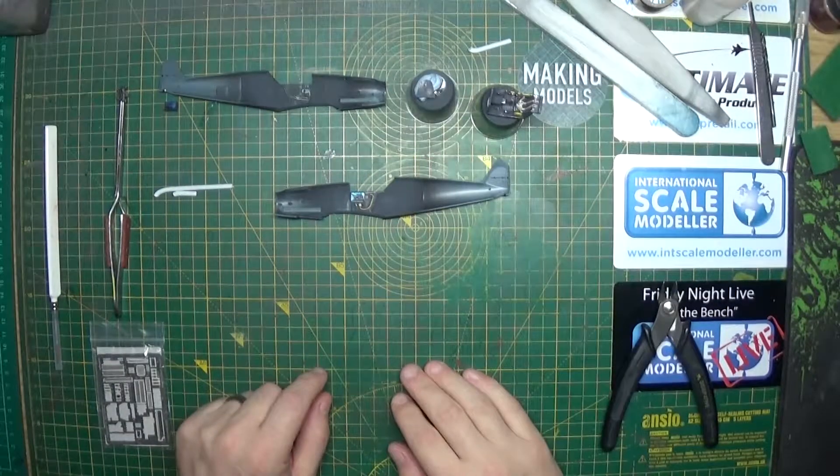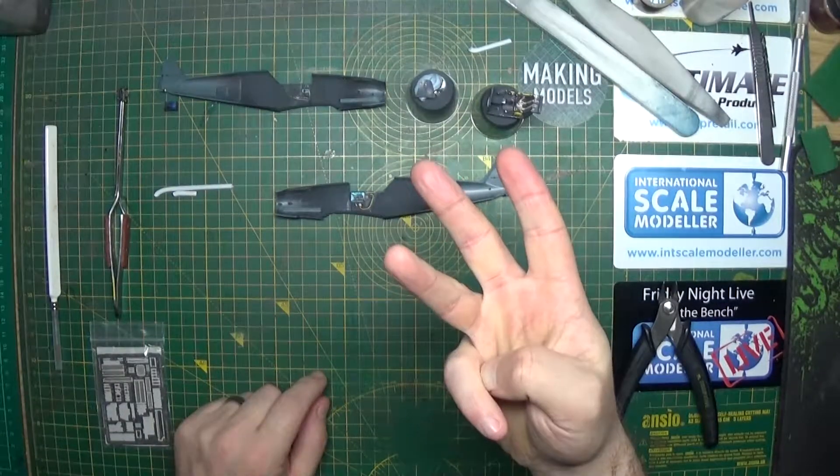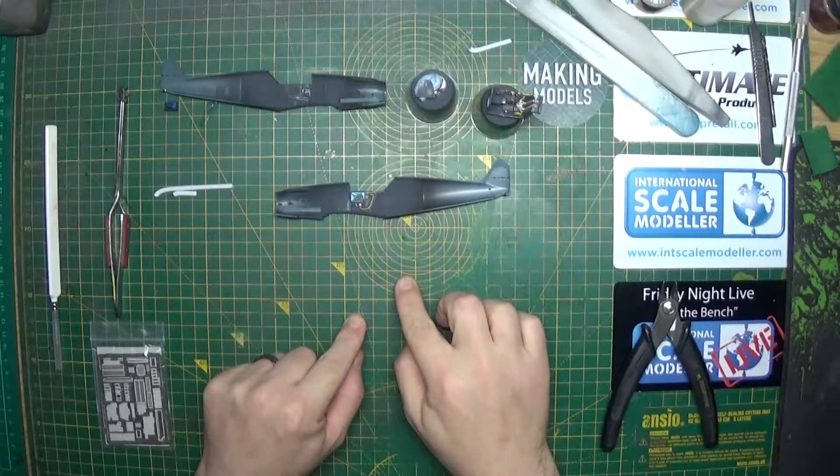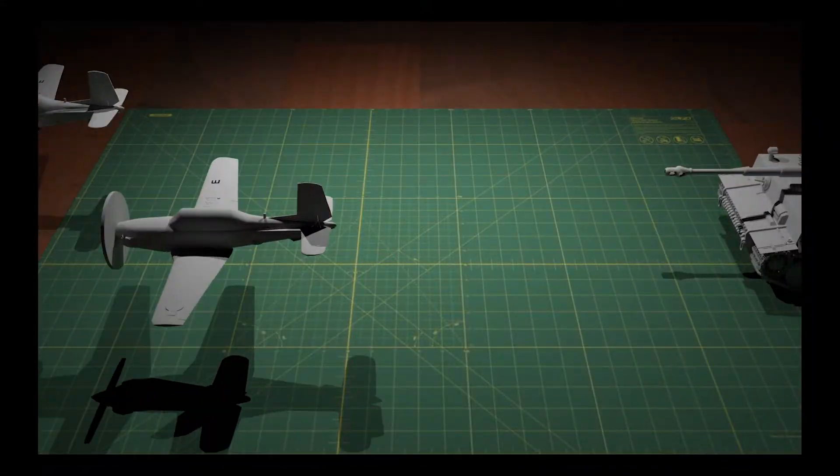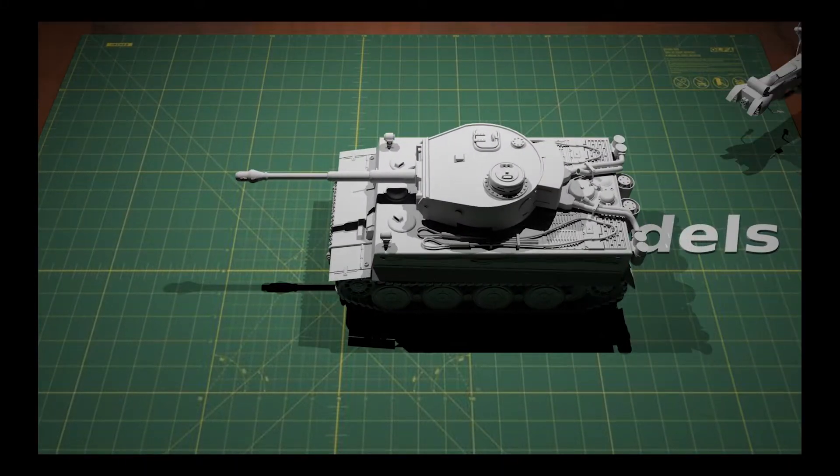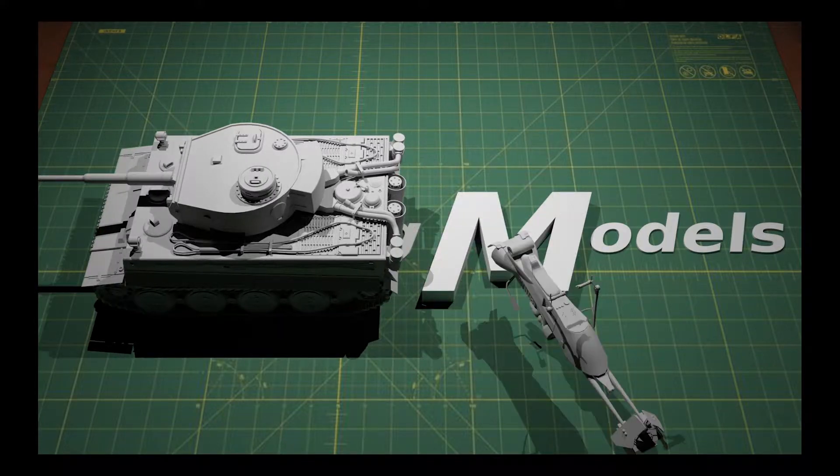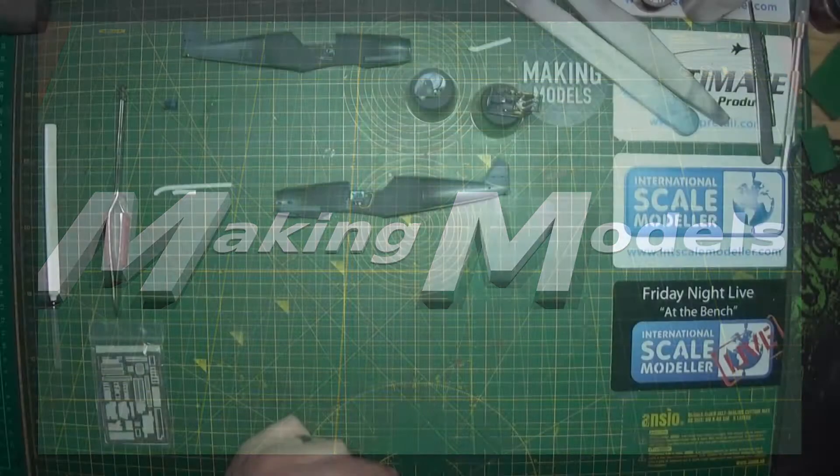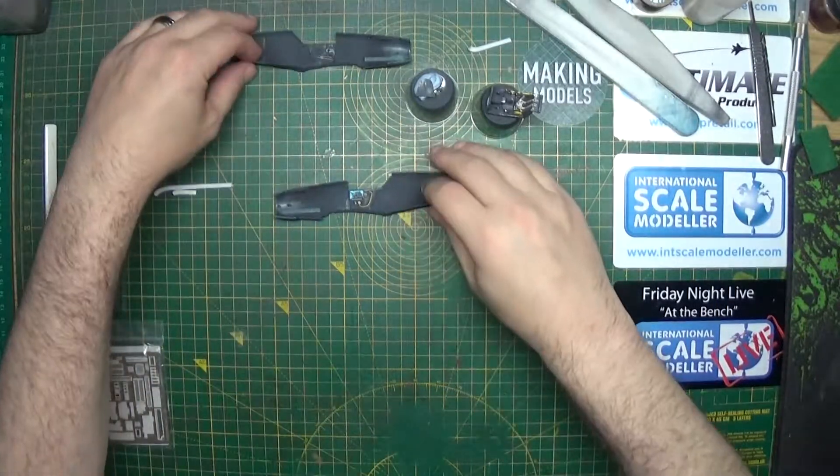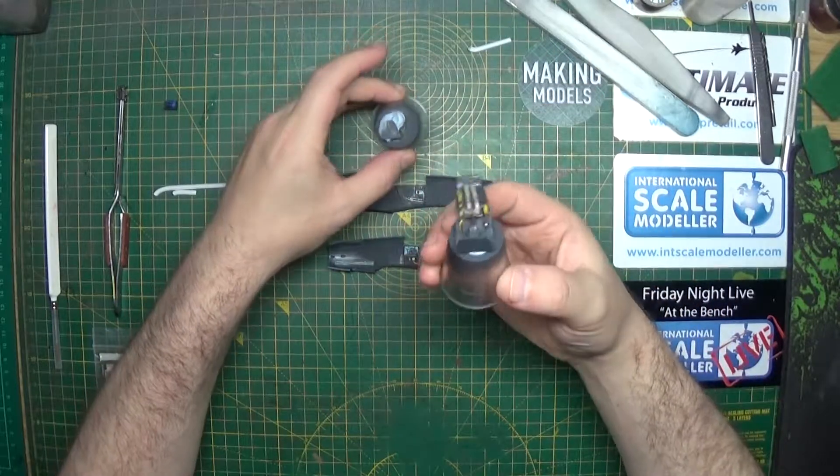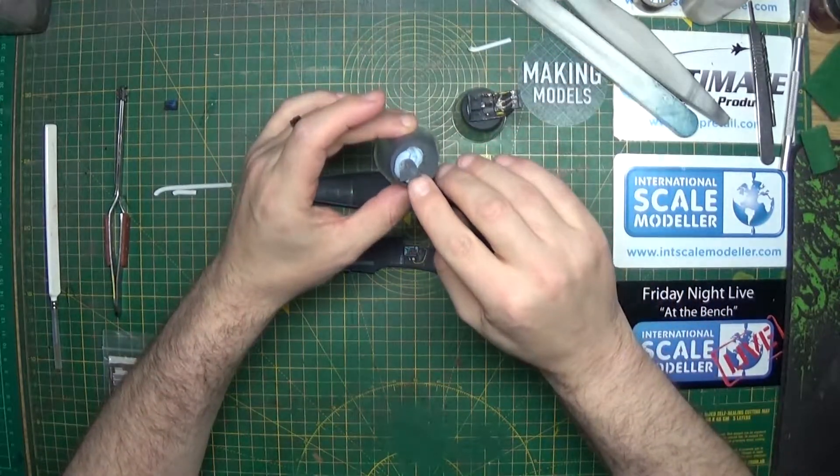Hey folks, Carl here and welcome to episode 3 of Eduard's BF 109 G2. Okay folks, so we have the two halves done, the cockpit itself and we have this little back plate of the cockpit as well.